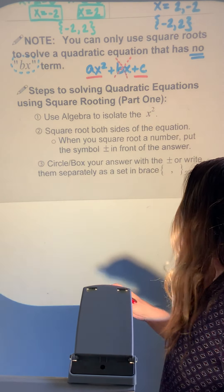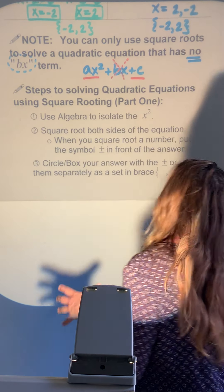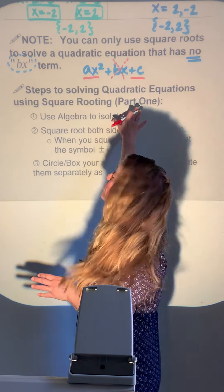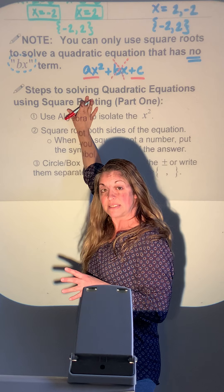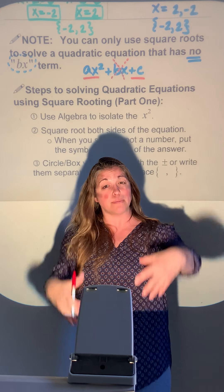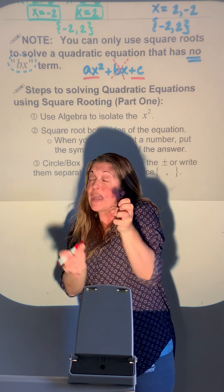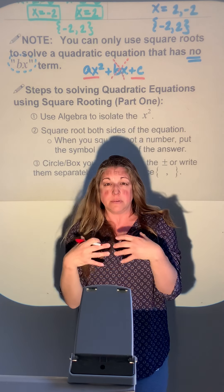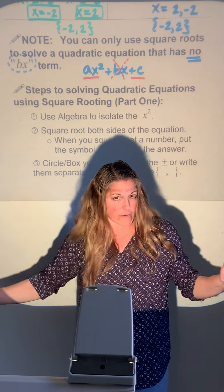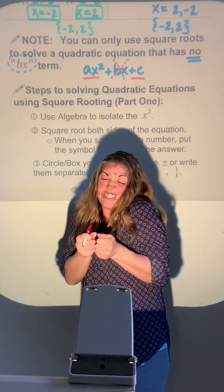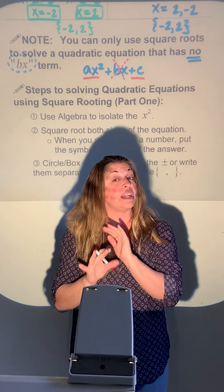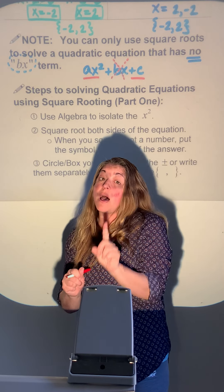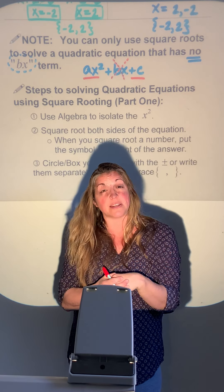In Algebra 2 you may learn completing the square, where they take a problem and create one with no bx term. But for our purposes, if you see just an x hanging out in a problem, you cannot use this method — you have to use factoring or the other method we'll discuss in the next video.